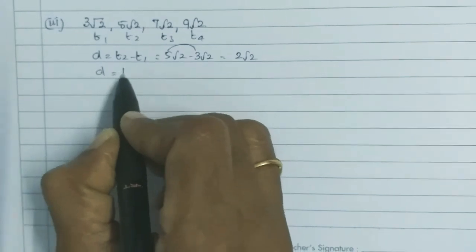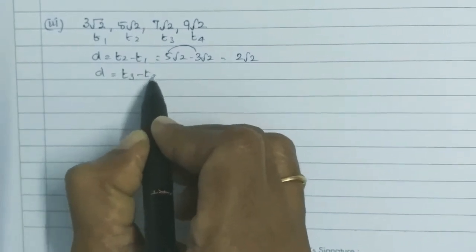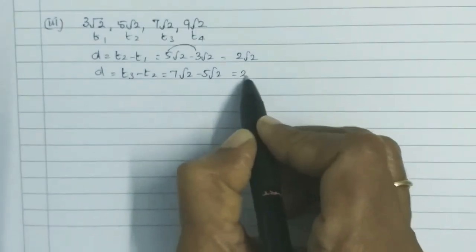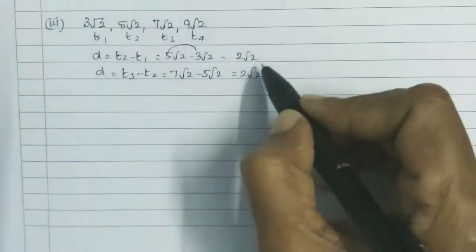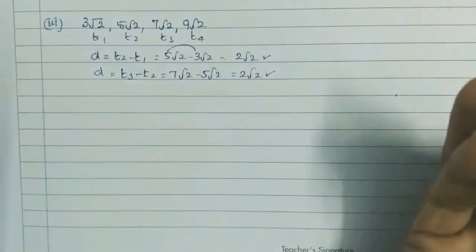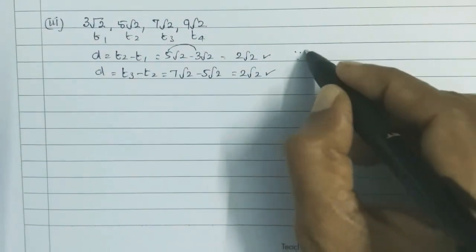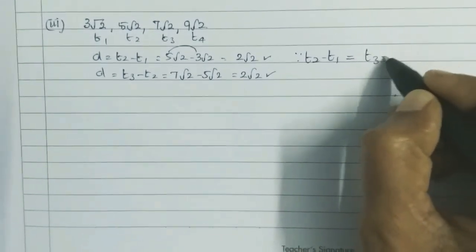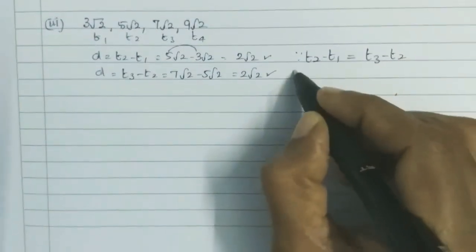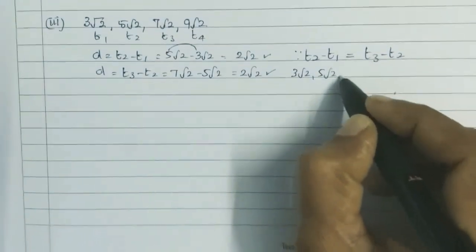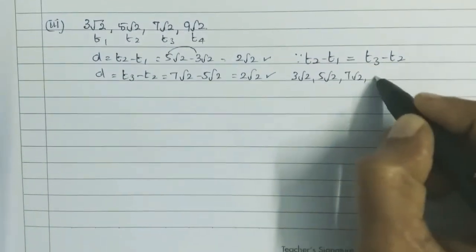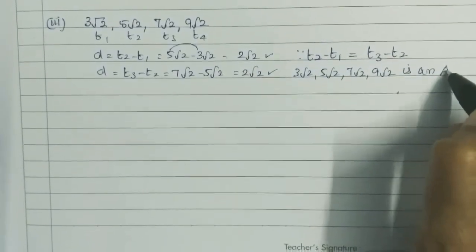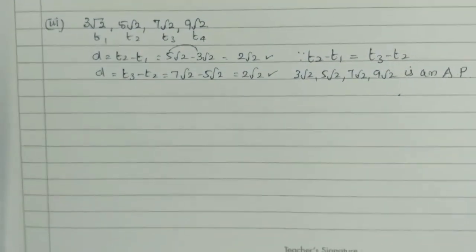The second D equals T3 minus T2, that is 7√2 minus 5√2, which equals 2√2 again. Since T2 minus T1 equals T3 minus T2, the sequence 3√2, 5√2, 7√2, 9√2 is an AP. That is all.